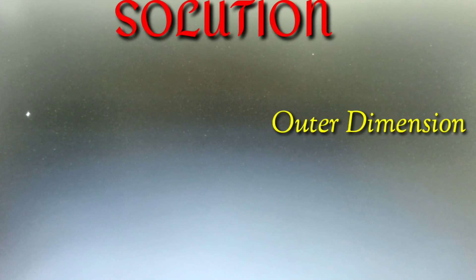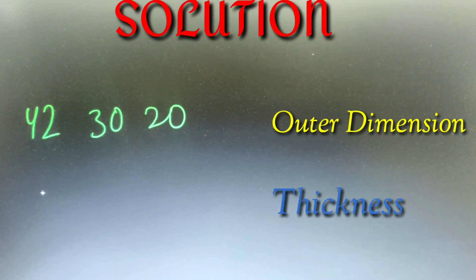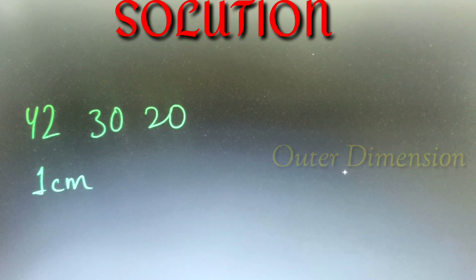According to our given question, the outer dimensions of the closed cuboidal box are 42 centimeters, 30 centimeters, and 20 centimeters respectively. We are given that the thickness of the wood is 1 centimeter, and we have to calculate the volume of the wood used in making the box.